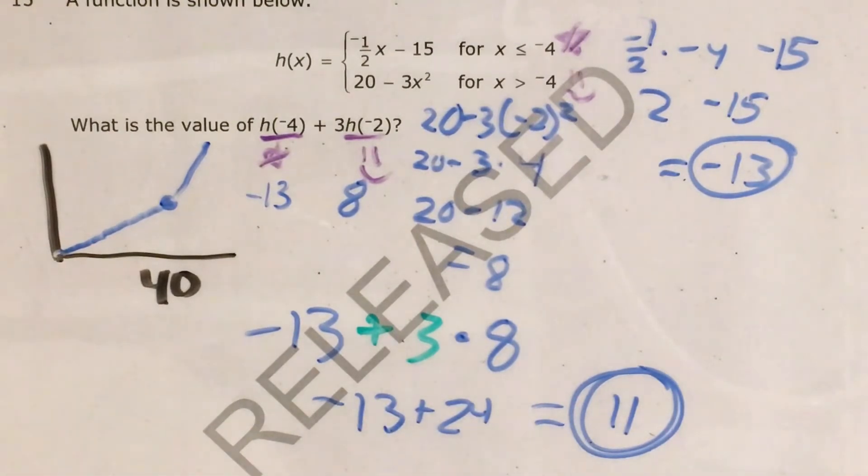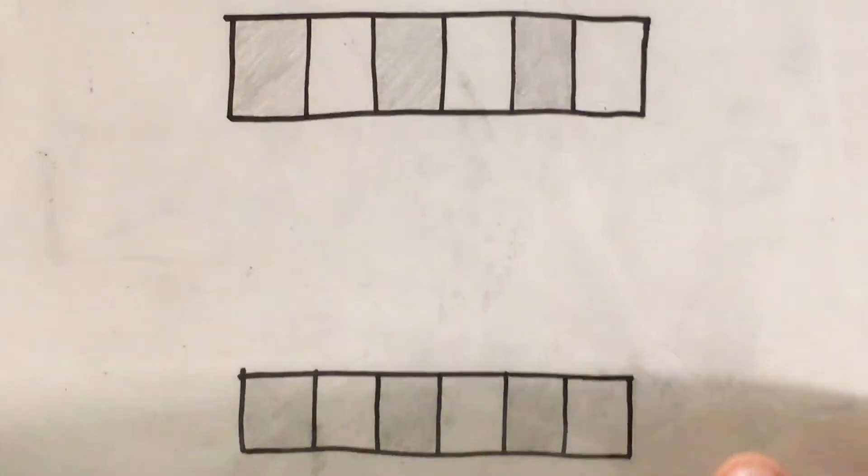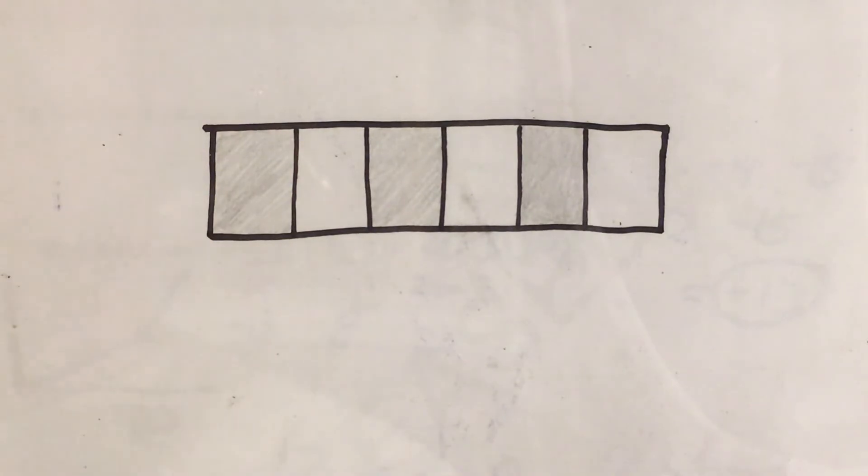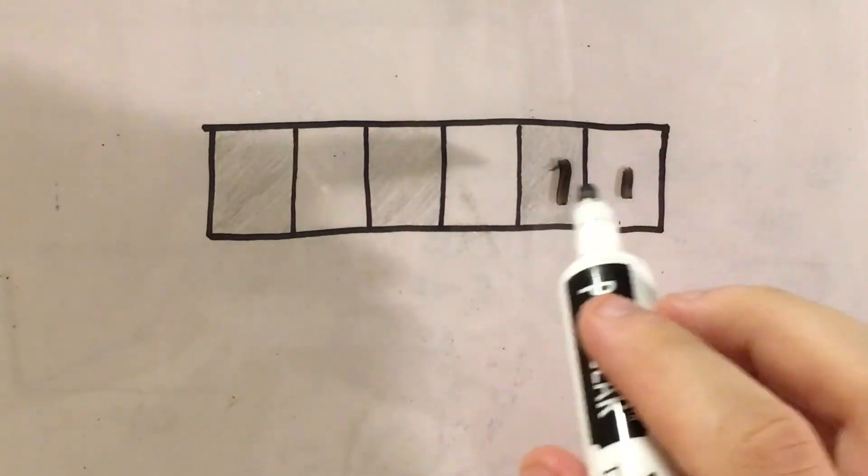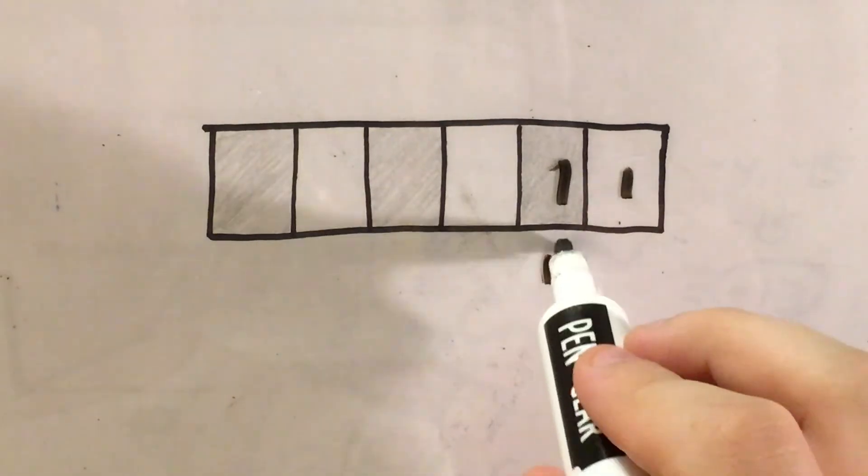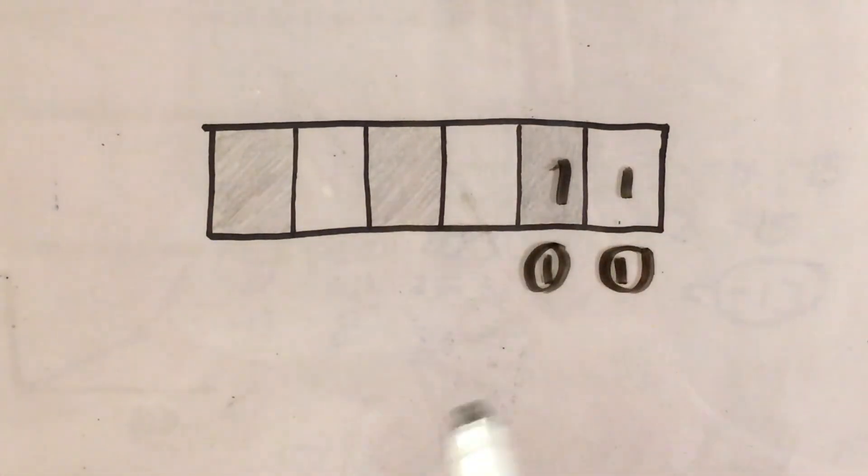And just the last thing I need to do for this problem is pull out my gridded response page. Because if you take the paper test, you'll have to end up doing this. So I would write my answer of 11. I would give each box one digit. Find my one bubble under each digit where I've written a 1 and bubble it in.